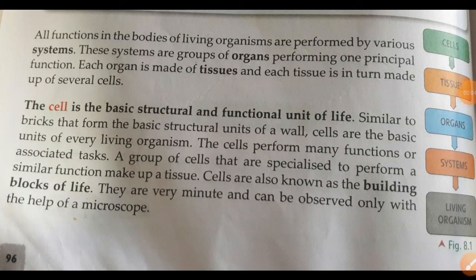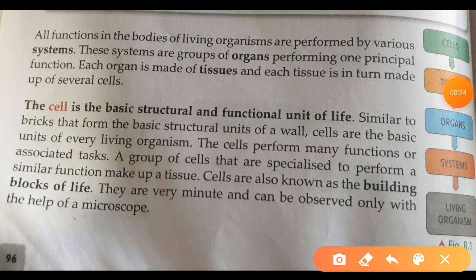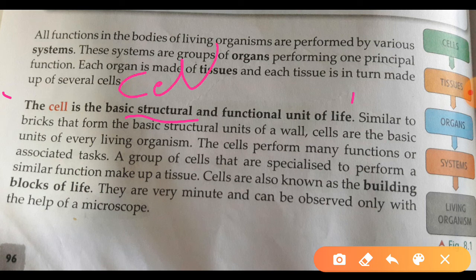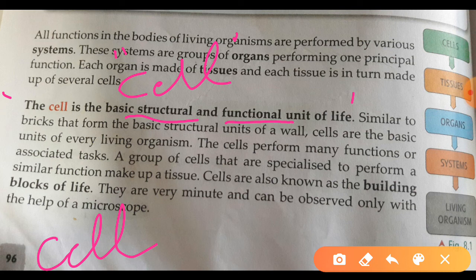Hello students, today we will discuss about the cell, the functional and structural unit of life. This is the 8th chapter of class 8th. Why is the cell called the structural unit? Because all living beings' bodies are made up of cells, so their structural setup is because of the cell. The cell is also called the functional unit of life because cells perform all the basic functions which are important for the survival of living beings.